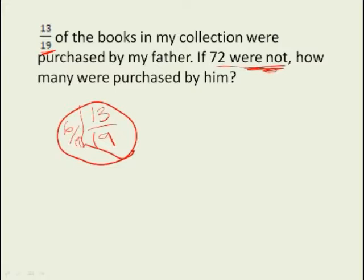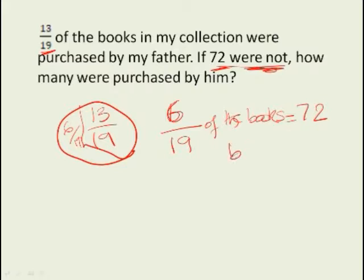So it's 6 over 19 of the books, of the total books, are the ones that were not bought by his father, and it equals 72.